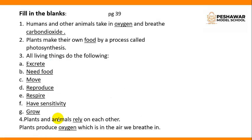Now fill in the blanks on your book, page number 39. Number 1: Humans and other animals take in oxygen and breathe out carbon dioxide. Number 2: Plants make their own food by a process called photosynthesis. Number 3: All living things do the following — they excrete, they need food for their life, they move, they can reproduce, they can respire, they show some sensitivity, and they can grow. Number 4: Plants and animals rely on each other. Number 5: Plants produce oxygen, which is in the air we breathe in.